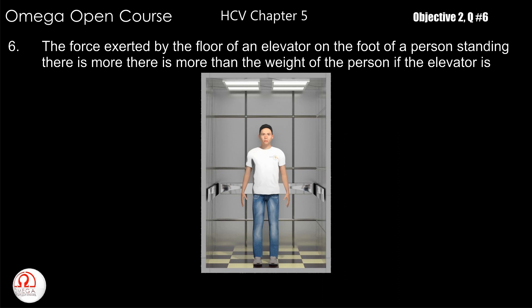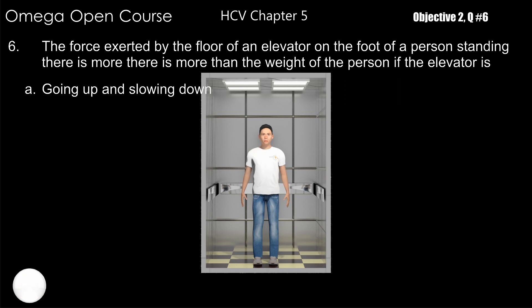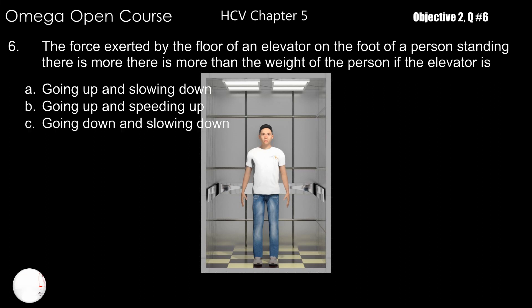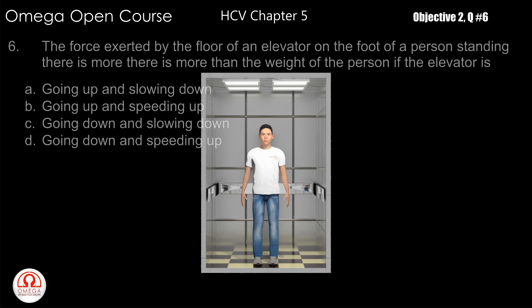The force exerted by the floor of an elevator on the foot of a person standing there is more than the weight of the person if the elevator is: A) going up and slowing down, B) going up and speeding up, C) going down and slowing down, D) going down and speeding up.